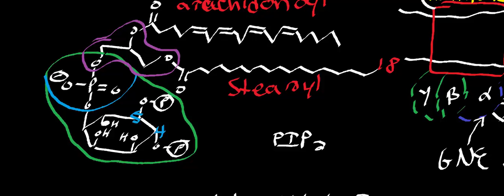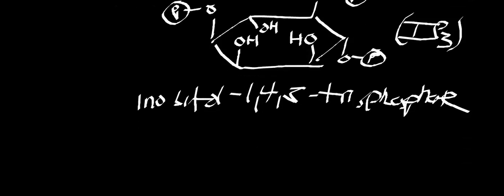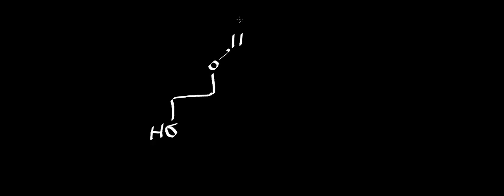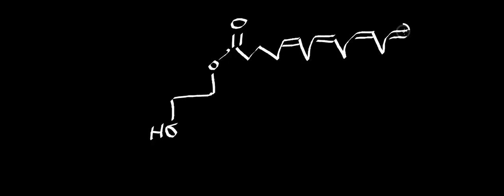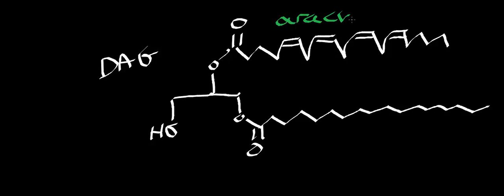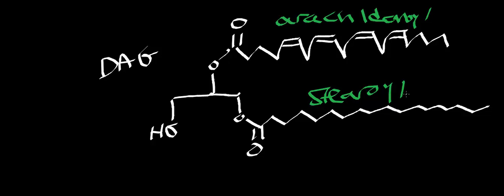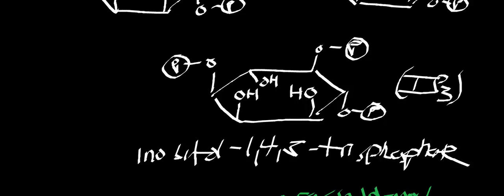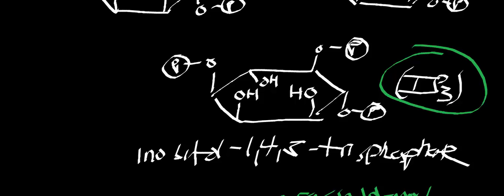We also generated diacylglycerol. Its structure has a hydroxyl group, the arachidonoyl group, and the stearoyl group — that is diacylglycerol. The first product we'll discuss in detail is IP3, inositol 1,4,5-trisphosphate, and we'll come to diacylglycerol second.